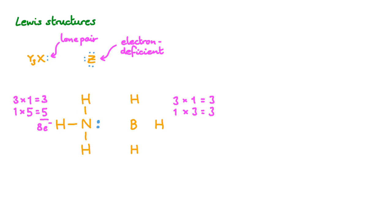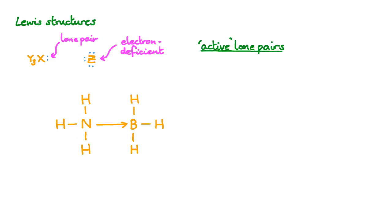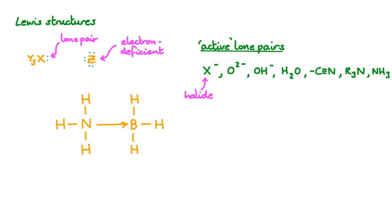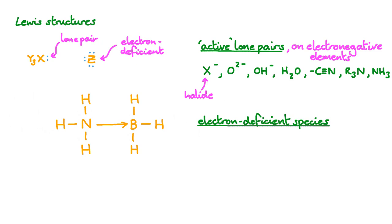Now what about BH3? Each hydrogen contributes one valence electron, and a boron atom contributes three. That's six electrons in total — just enough to form single bonds between boron and each of the hydrogen atoms. The boron atom could be more stable with one extra bond, but it doesn't have the electrons to do it. Instead, we need both electrons to be provided by a Lewis base. The nitrogen donates both electrons in its lone pair into the nitrogen-boron bond. However, not all lone pairs are reactive. We tend to see more reactive lone pairs on more electronegative elements. The electron-deficient species that will act as Lewis acids include boron and aluminum compounds, and various transition metal ions. You'll just need to remember how to draw a Lewis structure, find a lone pair, and find an incomplete octet.